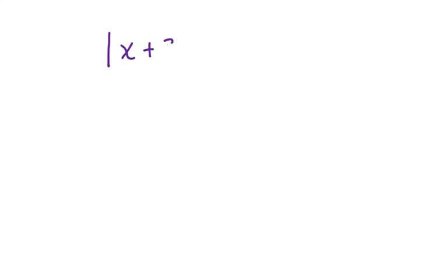Do you know how to solve an absolute value equation? Let's take a look at an example. The absolute value of x plus 3 is equal to 9. Now regardless of what's inside the absolute value bars, we know that the absolute value of 9 or negative 9 are both equal to 9.